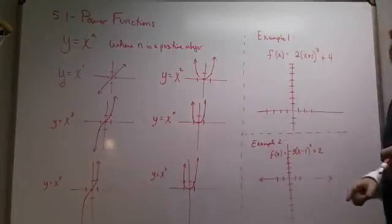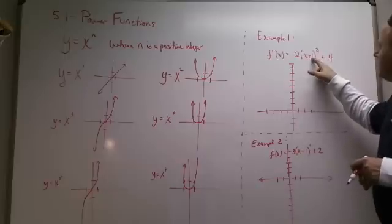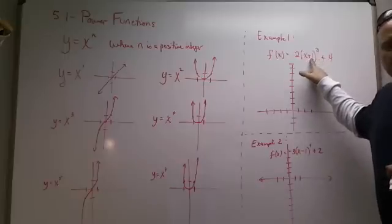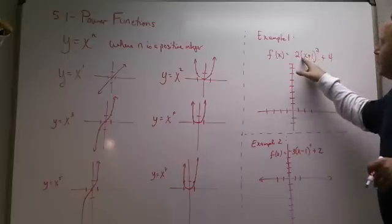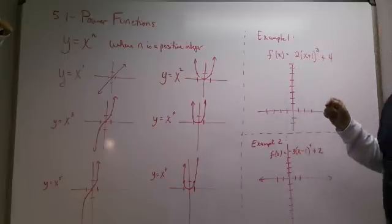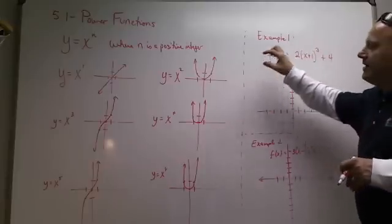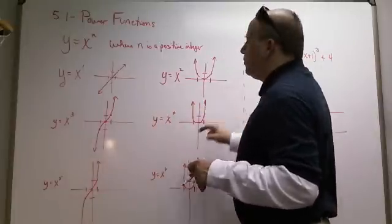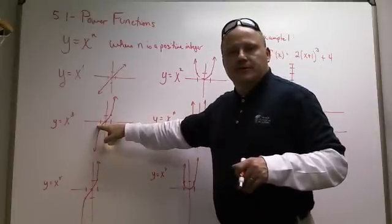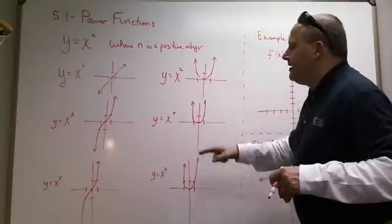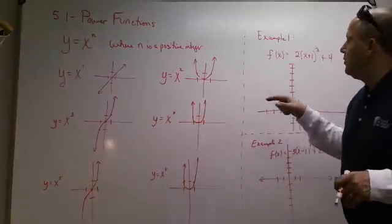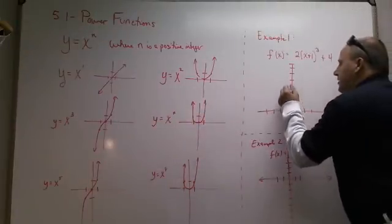So we're going to graph this one. If you remember, if there was a plus 1, that will go one unit to the left. It stretches by a factor of 2 and adds 4 to it. So which power function are we looking at? It's the x cubed. So the answer to this problem will have this shape. So we take this graph and move it one unit to the left and four units up.